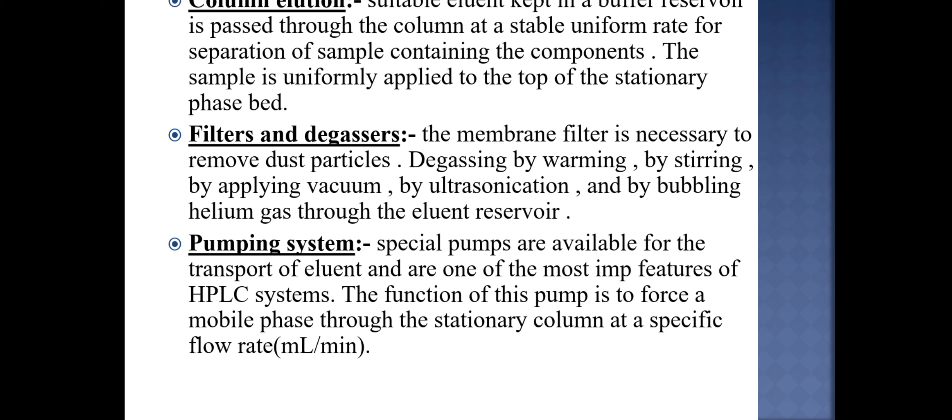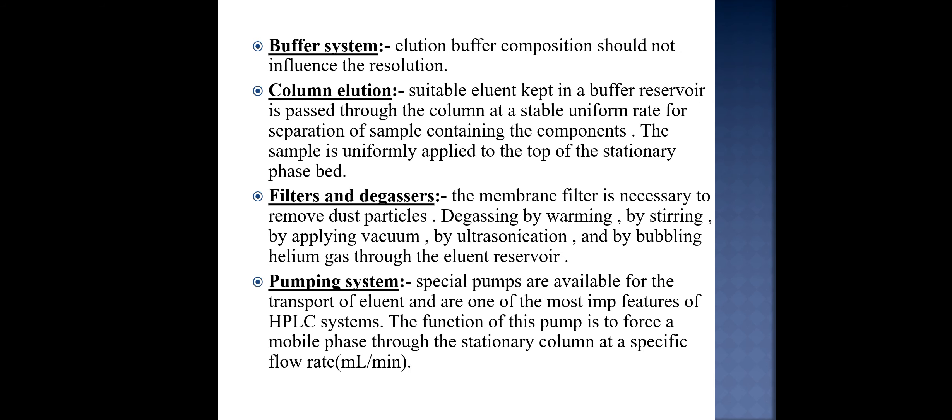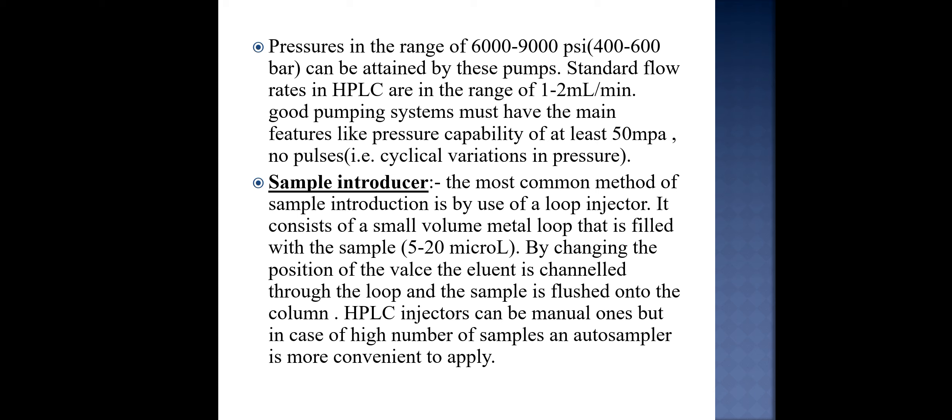Pumping system. Special pumps are available for the transport of eluent and are one of the most important features of the HPLC system. The function of this pump is to force a mobile phase through the stationary column at a specific flow rate which is ml per minute. The pressure ranges are 6000 to 9000 psi or 400 to 600 bar and can be attained by these pumps. Standard flow in HPLC is in the range of 1 to 2 ml per minute. Good pumping system must have the main features like pressure capability of at least 50 MPa and no pulses must be there and cylindrical variation in pressure must not be present.